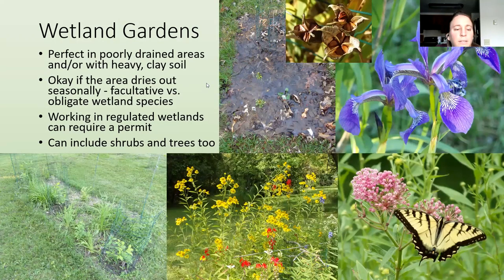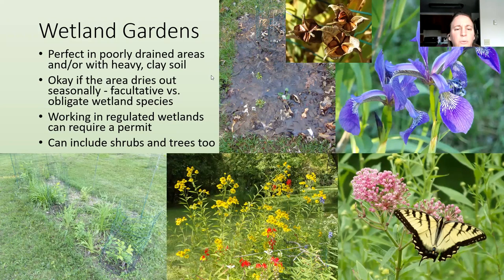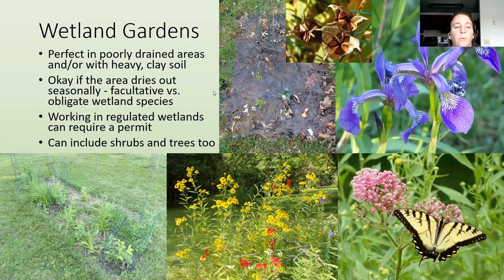Wetland gardens are perfect in poorly drained areas — if you have a wet section of lawn that's hard to mow, this is a good place for it, and it works well with heavy clay soil. It's okay if the area dries out in summer — that's fine for a lot of wetland plants. Facultative wetland plants grow mostly in wetlands but not only in wetlands, making them more flexible. Obligate wetland plants need to be wet all the time. If working in a regulated wetland, that can require a permit.